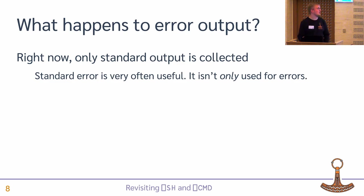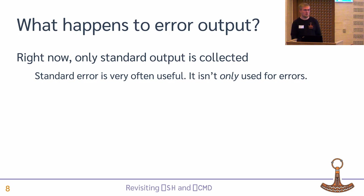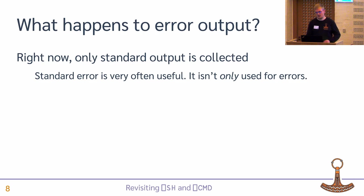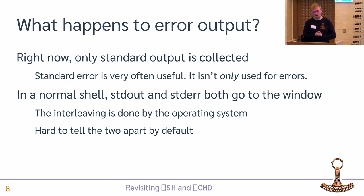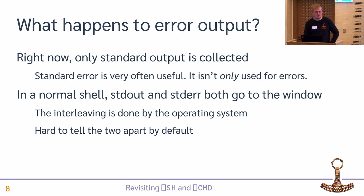Right now we only collect standard output, but it would be very nice if we could also collect standard error. Sometimes programs put output on the standard error stream even though it's not error messages. In a normal shell terminal window, both of these just go to the window interleaved — it's hard to tell them apart. But there are normally ways to separate them if needed. If we are able to pick both up, we should also have a way to separate them.